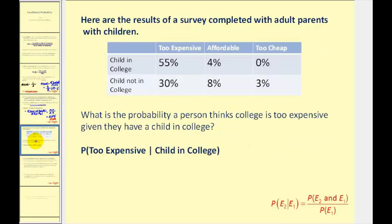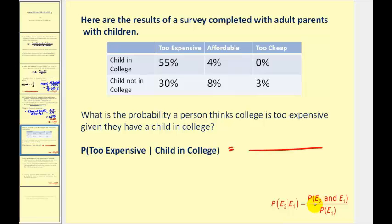Here's a survey completed by adults with children, who either had children in college or not in college. They were asked whether they thought college was too expensive, affordable, or too cheap. The question is: what is the probability that a person thinks college is too expensive given that they have a child in college? Using the formula, it equals the probability that adult parents think college is too expensive and have a child in college, which is 55%, or 0.55.